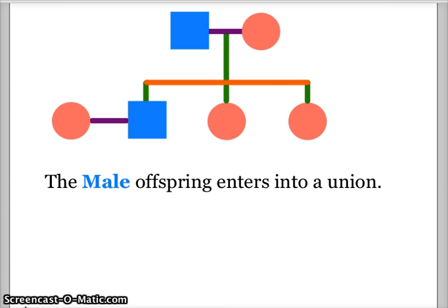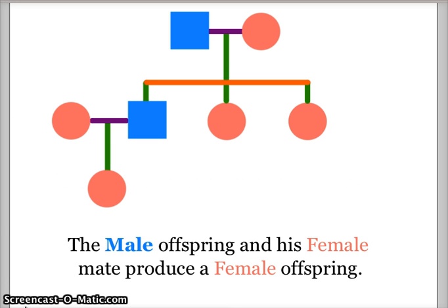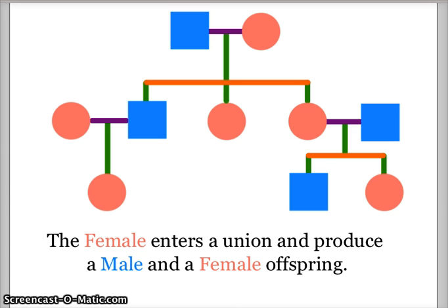Now, if that son enters into a union, we would then have another connection line creating this union. In this case, this male and female mated and produced a female offspring. If the female offspring on the far side of the pedigree entered into a union, and that mating created two more offspring — in this case, a male and a female offspring.